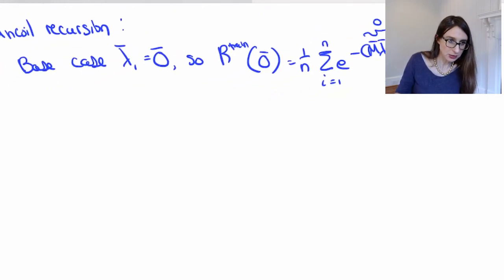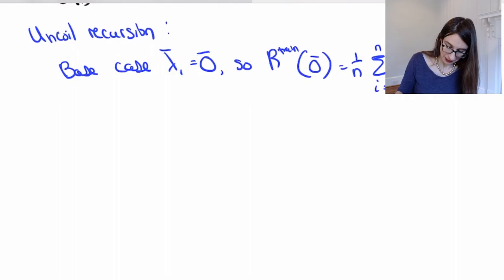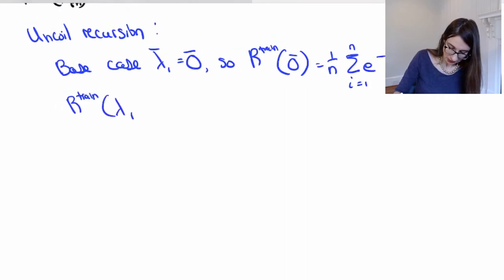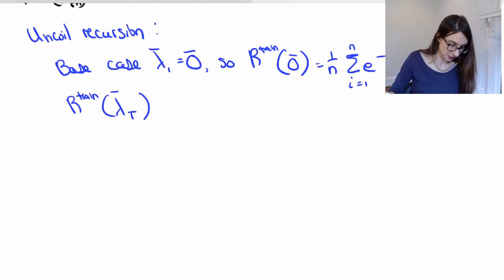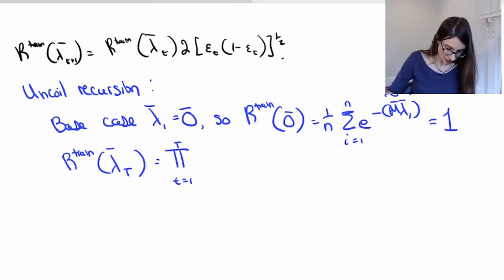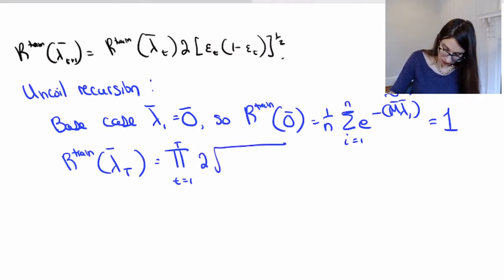Now let's go to the real case. R_train(lambda_T), after T iterations of Adaboost, gives us this product from t=1 to T. The product is 2 times — putting that (1/2) in as a square root — which equals the product of 2 * sqrt(epsilon_T * (1 minus epsilon_T)).